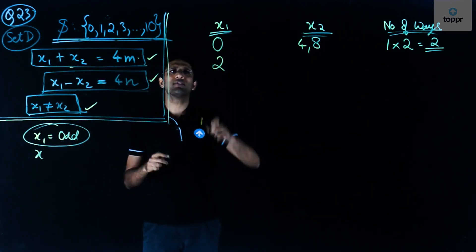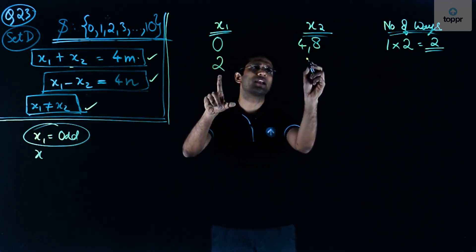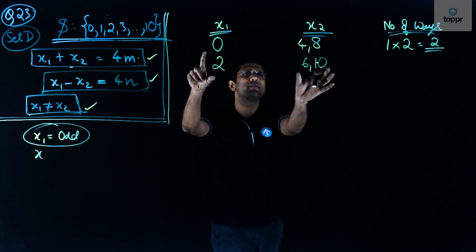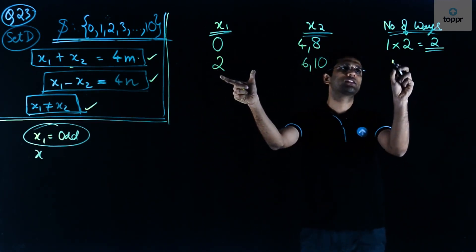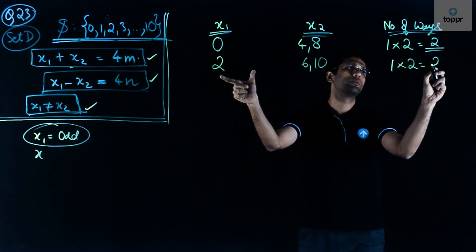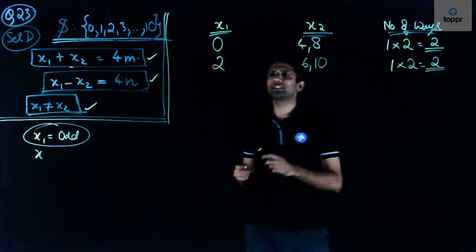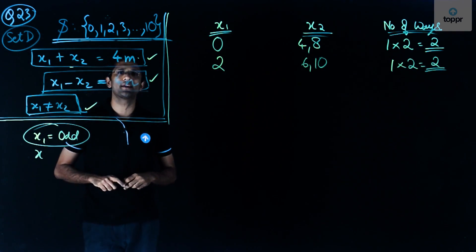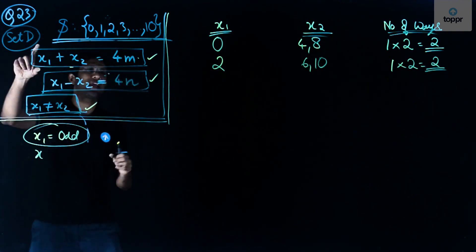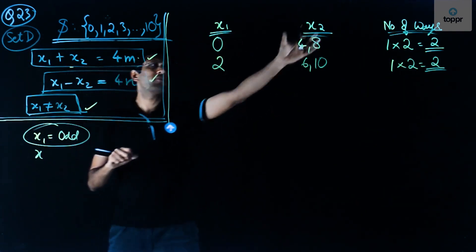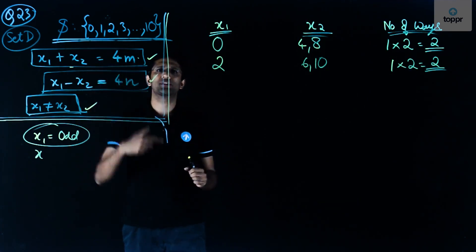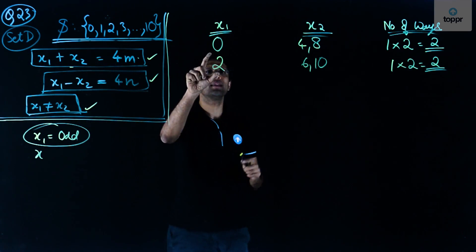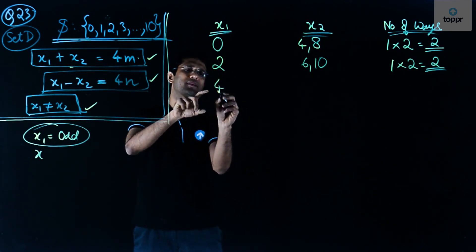If x1 = 2, x2 can have possible values 6 and 10, giving us 1 × 2 = 2 ways. Continuing, we skip x1 = 3 since it is odd, and odd numbers cannot yield an x2 satisfying both conditions. So the next entry is x1 = 4.